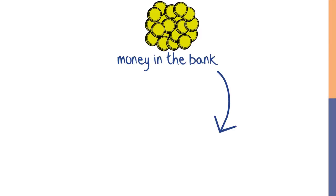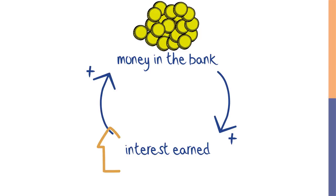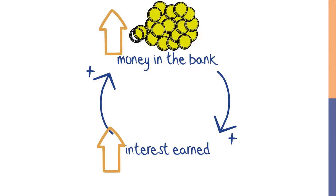When money deposited in a bank earns interest, which in turn increases the amount of money in the bank, that's a reinforcing feedback loop. As interest earned increases, money in the bank increases, allowing for even more interest to be earned. In causal diagrams, we sometimes mark reinforcing feedback loops with an R.